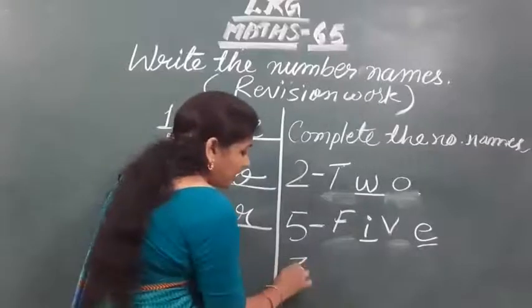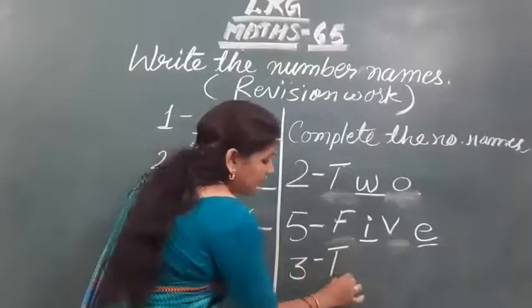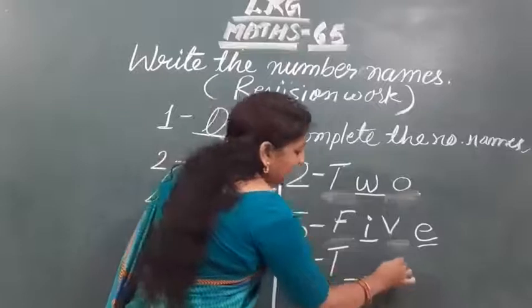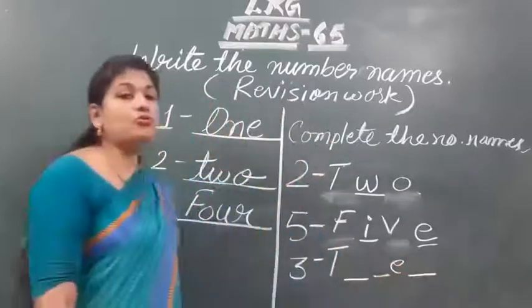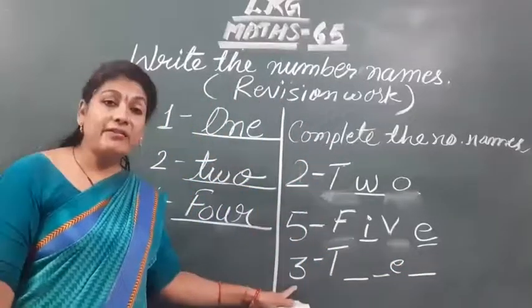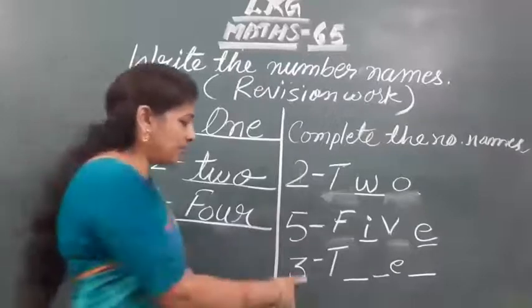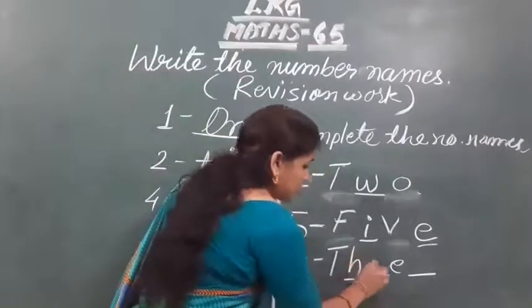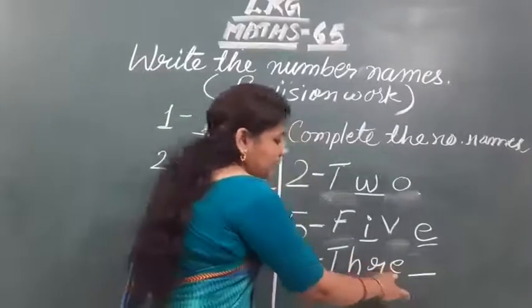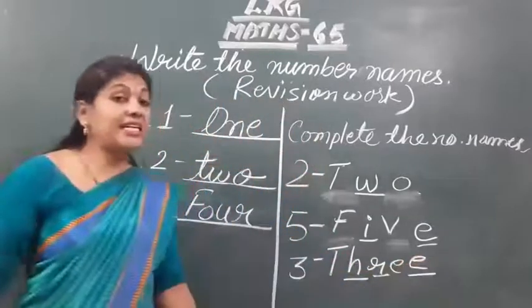If here three is given and spelling is given, then how to write? You know already. This is three. Then T-H-R-E-E. That is three.